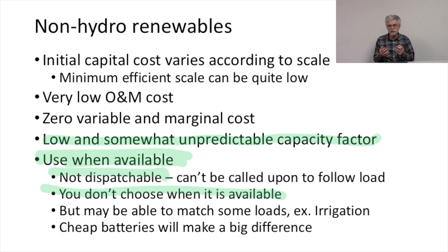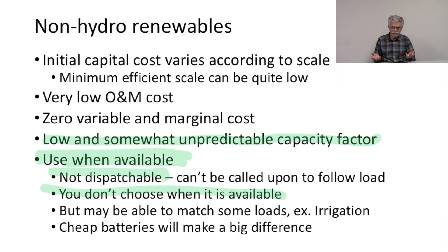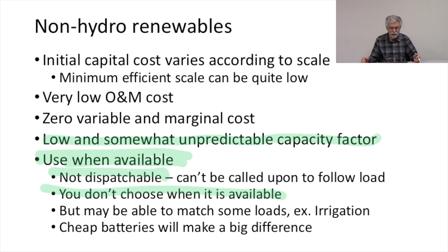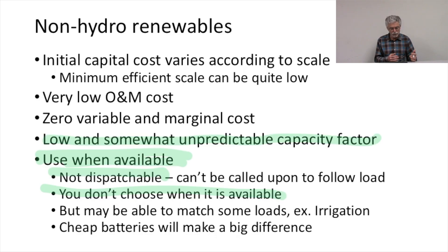The intermittency of the renewable would be less of a concern in that kind of match, because if you're getting a certain amount of solar energy on average, you're getting enough electricity to run your irrigation. It doesn't matter precisely what time of day — you don't have to store the electricity so you can do irrigation at night. So there are opportunities to match renewables resources to a load that they can serve without requiring any special other arrangements.